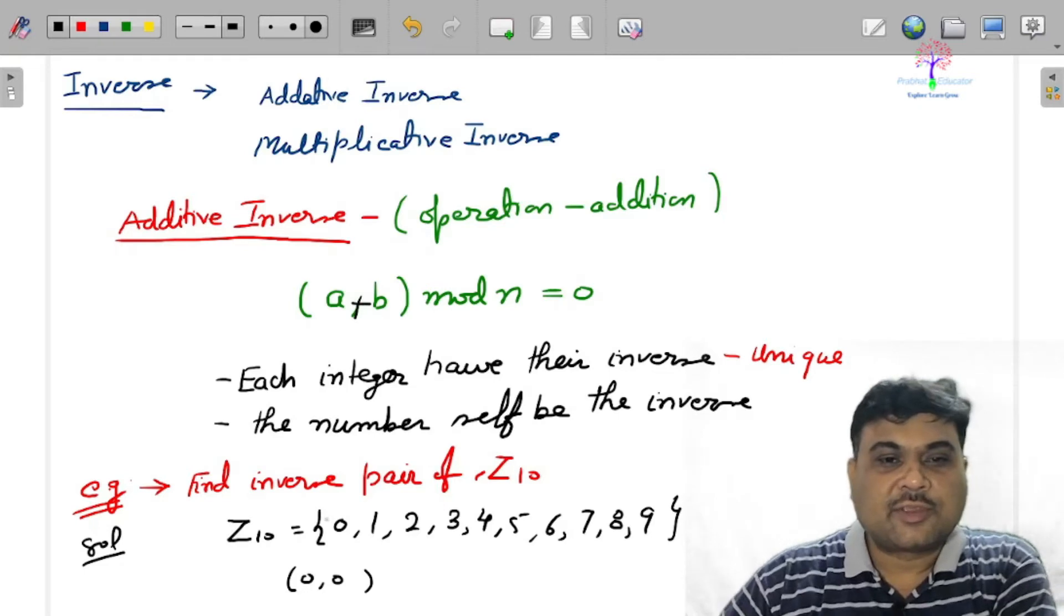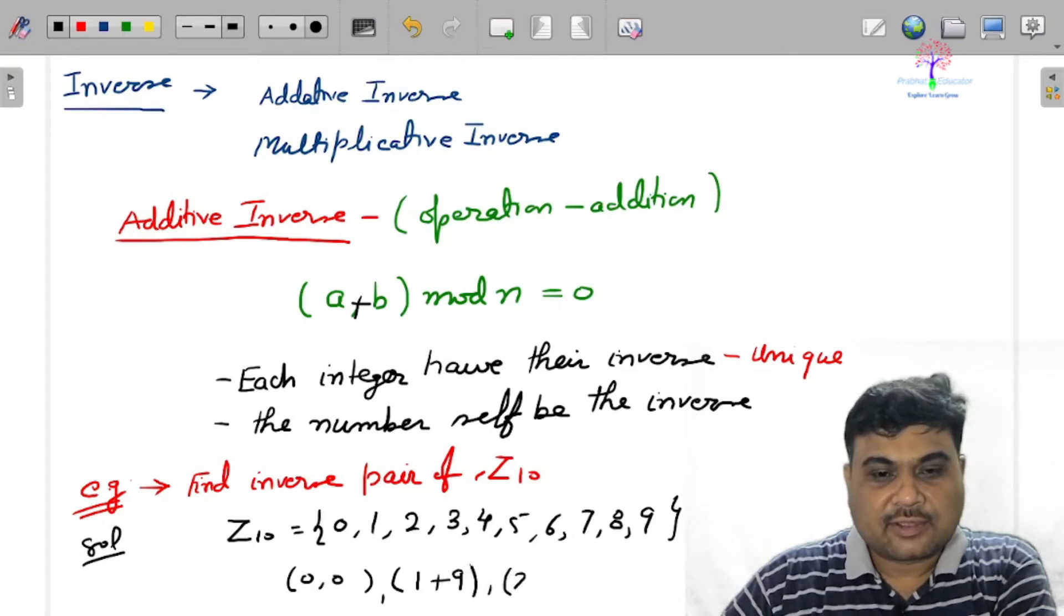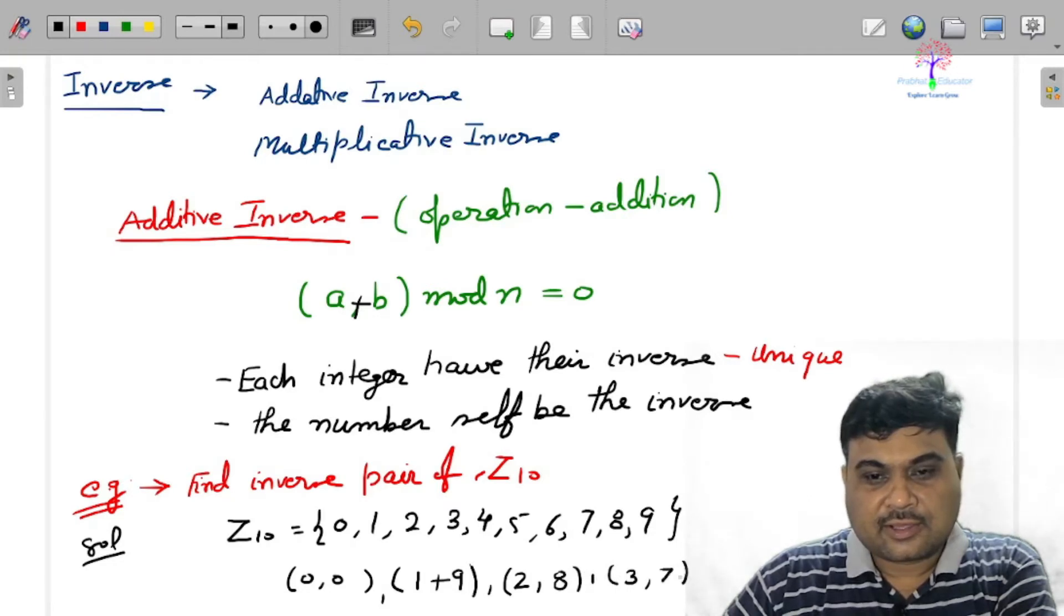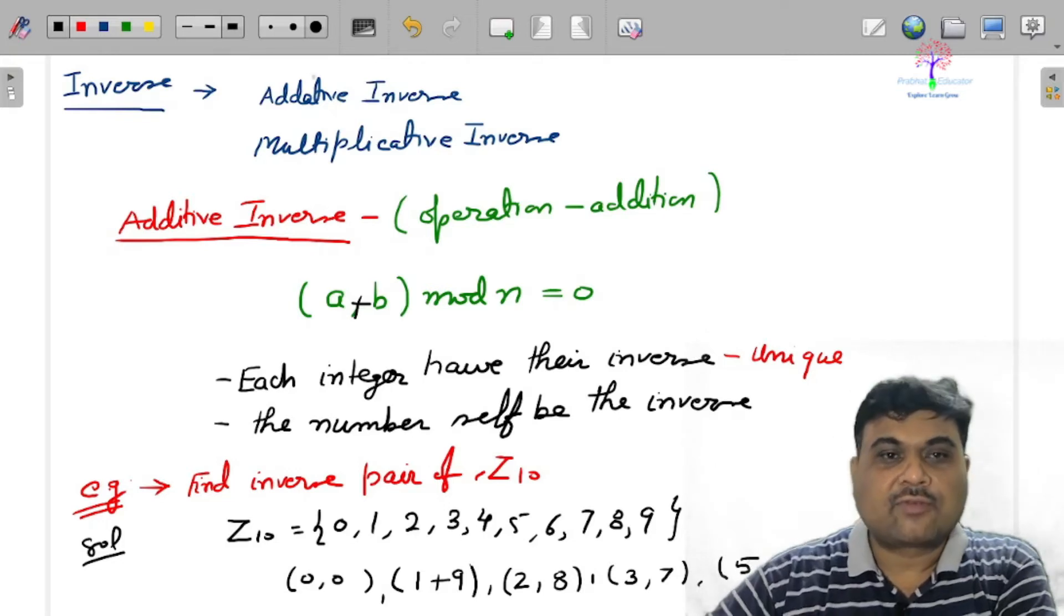What pairs you should have there? 0, 0 - the number itself, because when you do this operation a plus b mod n equal to 0. Next pair is 1 plus 9, 10 mod 10 is equal to 0. Next pair will be 2 and 8, 2 plus 8 mod 10 is equal to 0. Next pair is 3, 7. Next pair is 5, 5. Next pair is 4, 6.